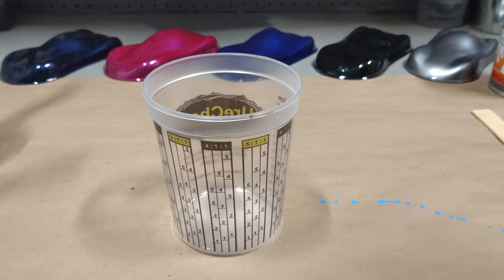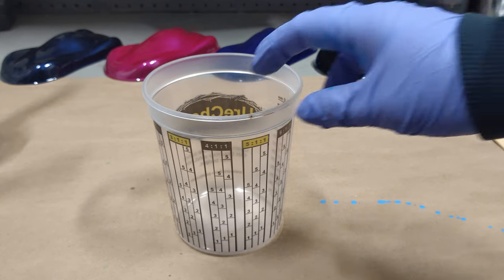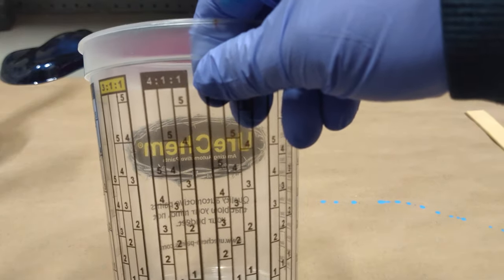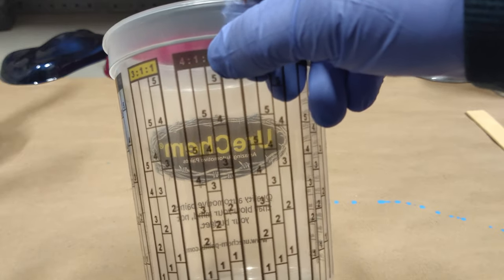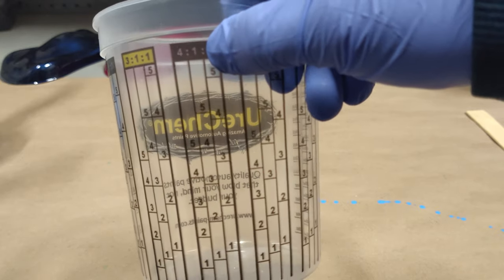I'll do one more for you. It's going to be our UC410 clear, four to one. Four parts clear coat, one part activator. So we're actually going to use the same column, the four to one to one. But since we only have two parts, we only need the first two rows.